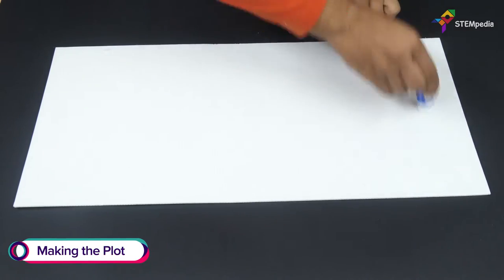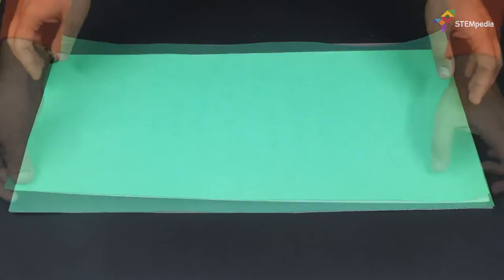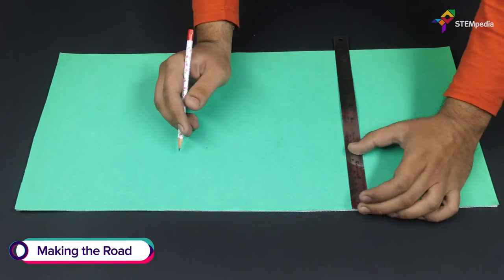Let's begin by creating a plot for our toll booth. Take a corrugated sheet and paste a chart paper on top of it. Draw a line of 10cm width along the center of the base.